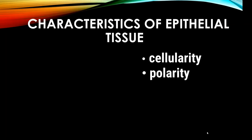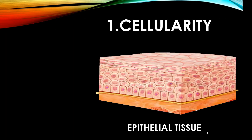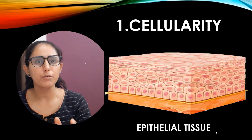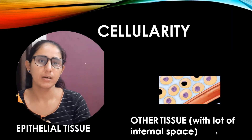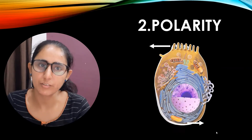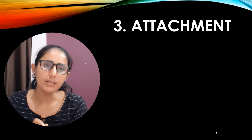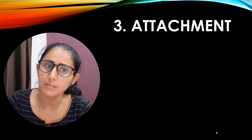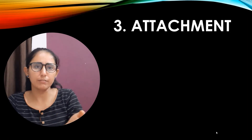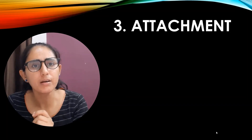The five characteristics are cellularity, polarity, attachment, avascularity, and regeneration. Cellularity means epithelial tissue is made up of tightly packed cells, whereas in other tissue types cells are spread apart and separated by extracellular material. Polarity means the cell looks different at the top than at the bottom. Attachment means the basal surface of the cells is attached to a special layer called the basal lamina or basement membrane.